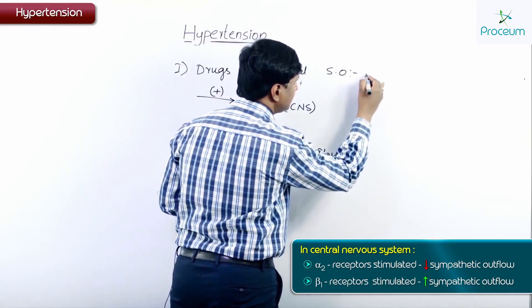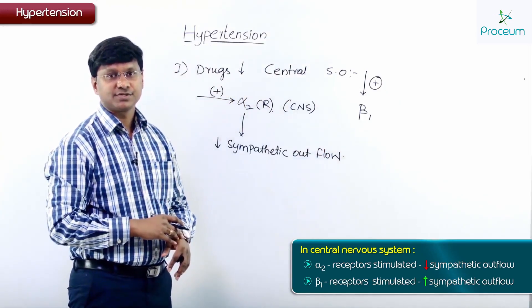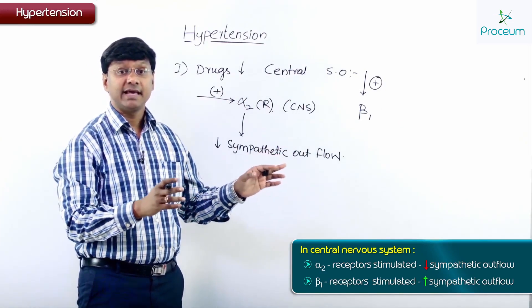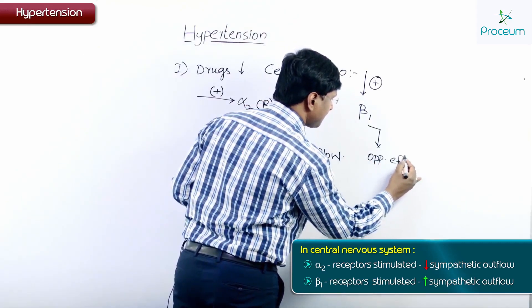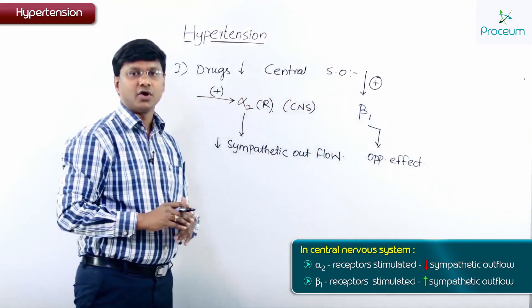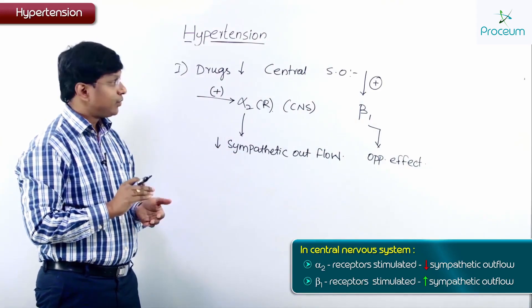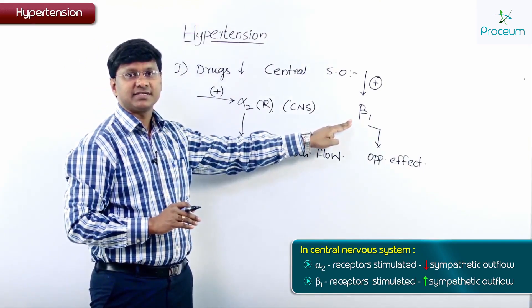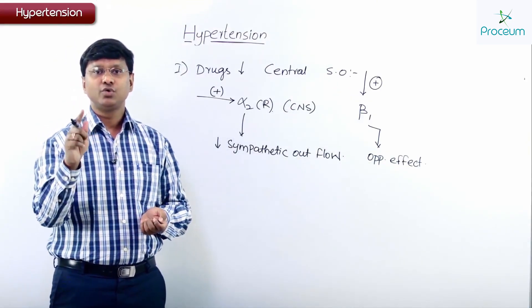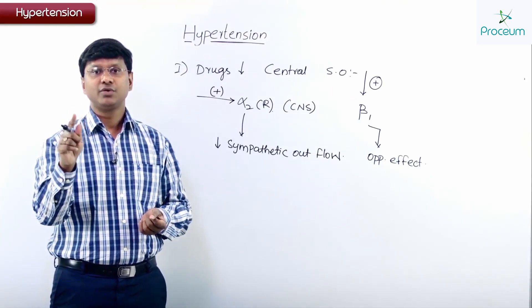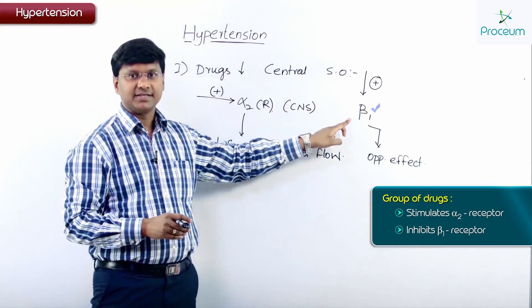In the central nervous system we also have beta-1 receptors, and stimulation of the beta-1 receptors in the brain has the opposite effect. When alpha-2 receptors are stimulated there is a decrease in sympathetic outflow, whereas when beta-1 receptors in the CNS are stimulated there is an increase. So we should give a group of drugs which will stimulate alpha-2 receptors and inhibit beta-1 receptors.